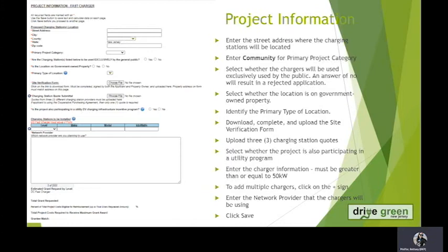Please select whether your project is also participating in a utility charging infrastructure incentive program. This box is where we will put the information about the charging stations to be installed. The drop-down will let you identify whether it's a single port or dual port. Then please enter the make, model, and the kilowatts associated with the station.